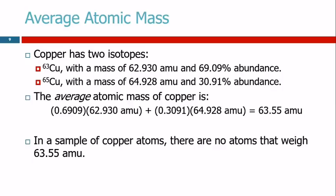But there are no copper atoms that actually weigh 63.55 atomic mass units. Some are heavier, and some are lighter, but there's none that are the average. Does that make sense?